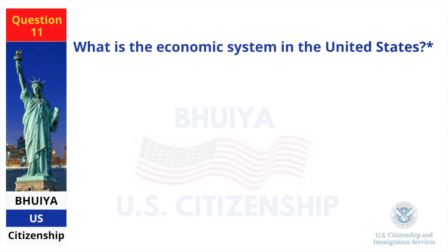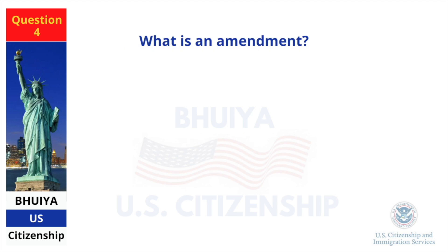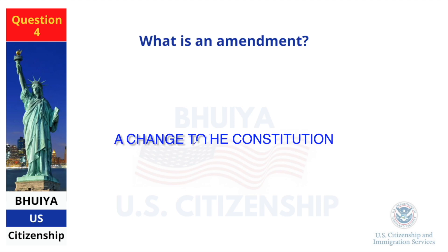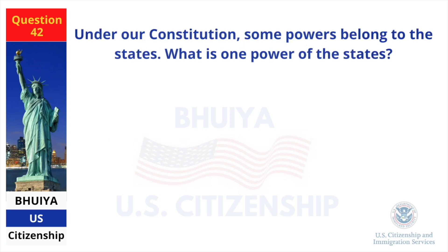What is the economic system in the United States? Market economy. Name one branch or part of the government. Congress. What is an amendment? A change to the Constitution.